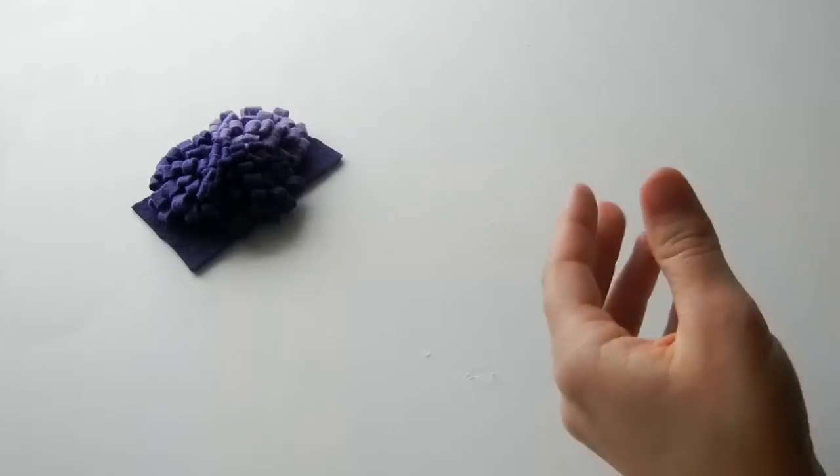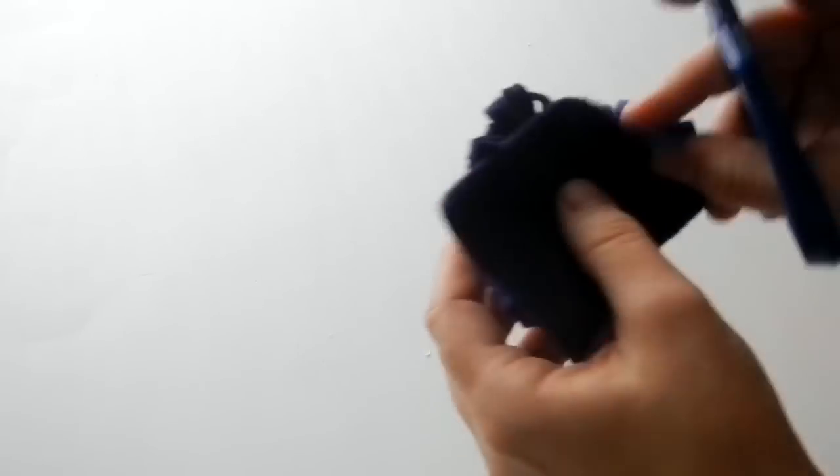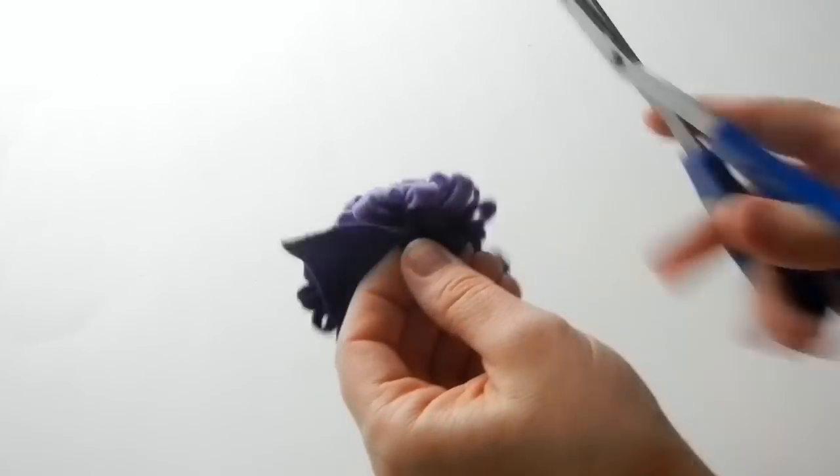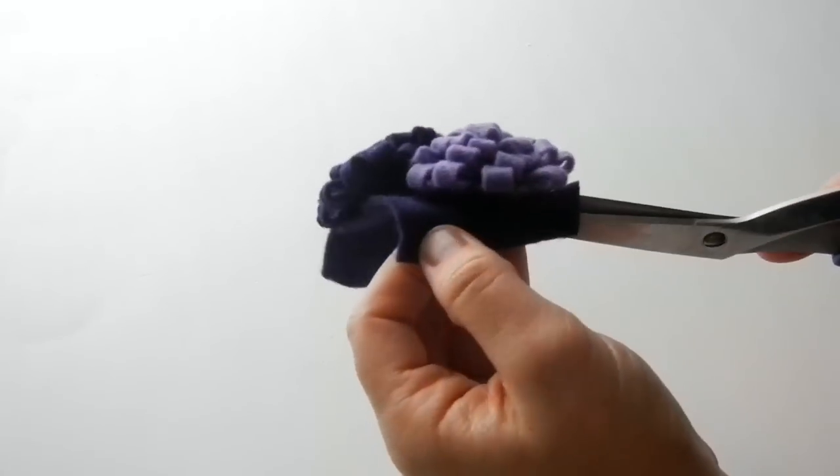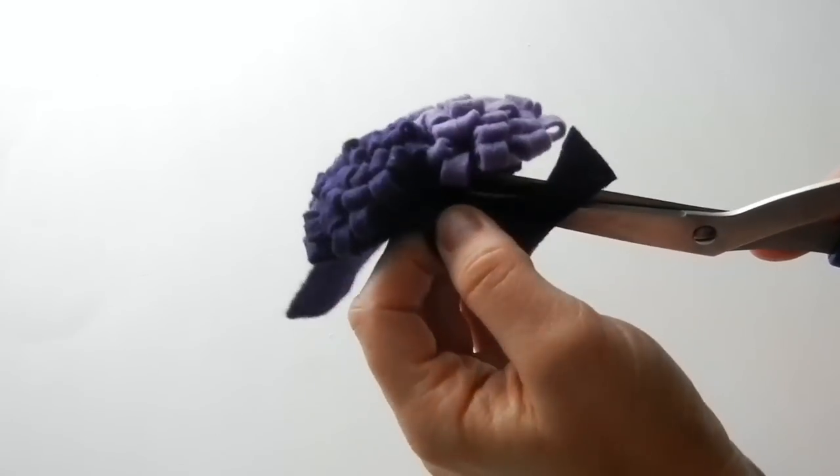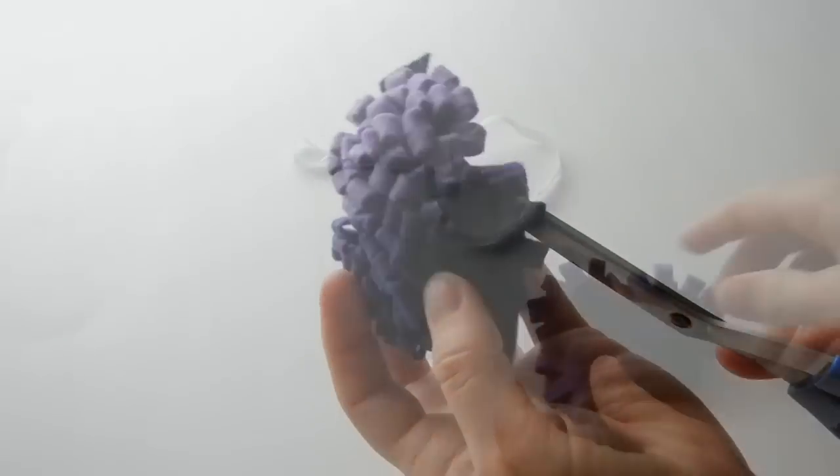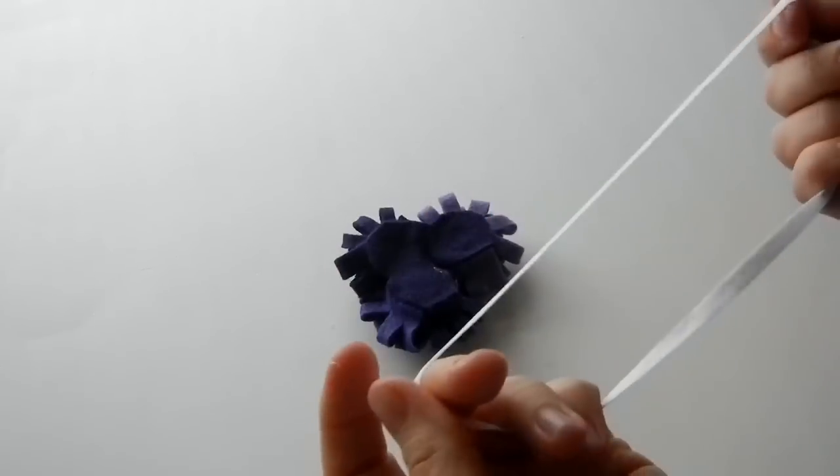Now back to our flower cluster. After we've glued it on, we're just going to take our scissors and cut out the extra felt. Go ahead and cut that off.